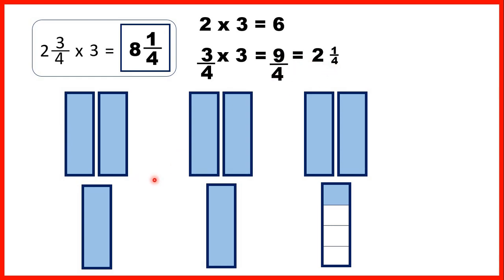So what do we have altogether? We have 8 wholes — 6 from the whole number part and then 2 more from the regrouped quarters — and we have 1 quarter. So our answer is 8 and 1 quarter.